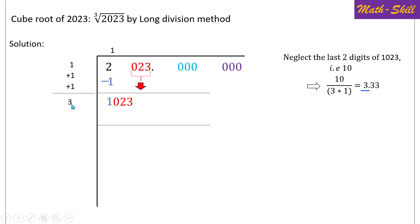To verify digit 3: join the current divisor number 3 with the trial digit 3 to make the two-digit number 33. Consider the trial digit 3 twice. Multiply by 1 (the quotient so far) followed by two zeros, making it 100.